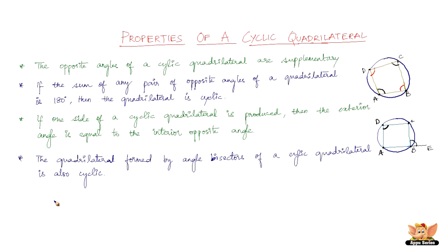The fourth property states that the quadrilateral formed by the angle bisectors of a cyclic quadrilateral is also cyclic. Here we have cyclic quadrilateral ABCD. Now let us bisect each one of the angles of this cyclic quadrilateral — this is just an approximate illustration, so please use proper tools to bisect the angles precisely. As a result of bisecting all four angles, we have a new quadrilateral in the middle formed by these four sides, and this formed quadrilateral is also cyclic.